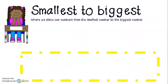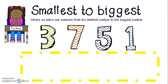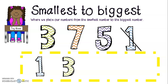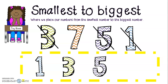Now we are going to try an example from the smallest to the biggest. Here are your 4 numbers: 3, 7, 5, 1. Pause the video now and place them from the smallest to the biggest. The smallest number is 1. The next smallest number is 3. The next smallest is 5, which would leave the number 7. So this would be your answer: 1, then 3, then 5, then 7.